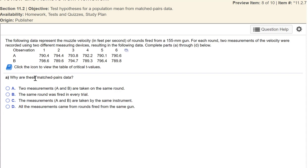So the first question is why is this paired? Think about this before you watch me do it. The two measurements A and B are taken on the same round. That makes sense. They're taken on the same round.